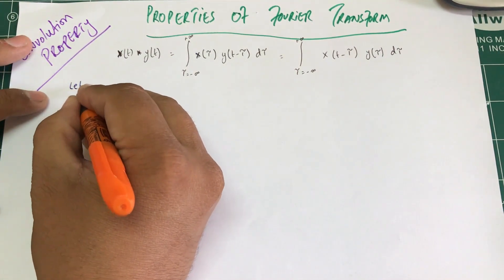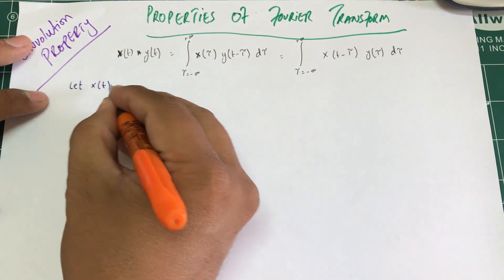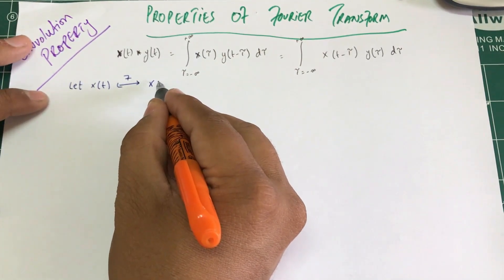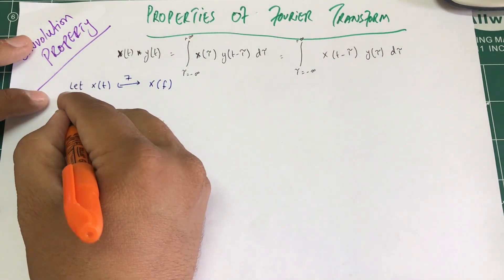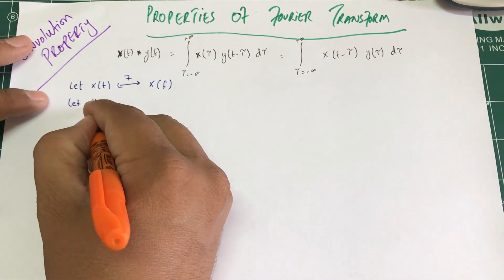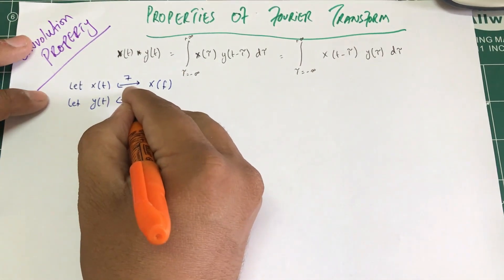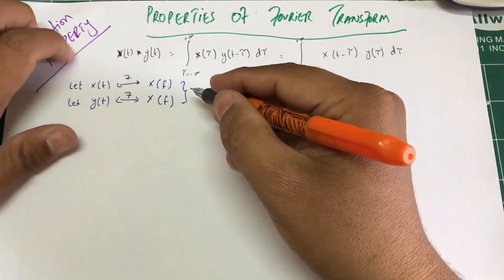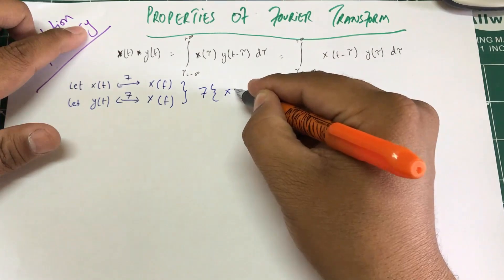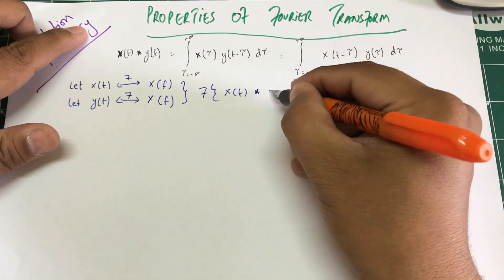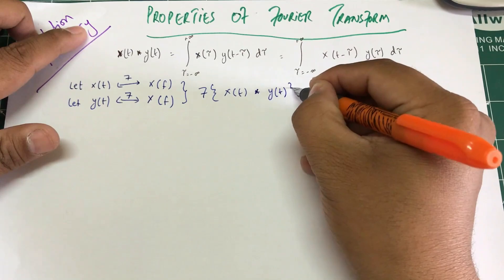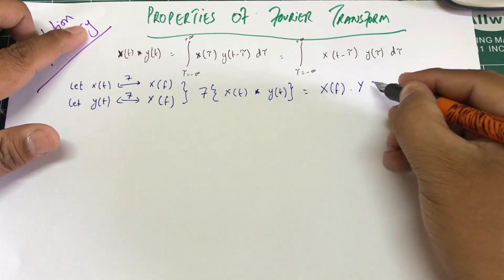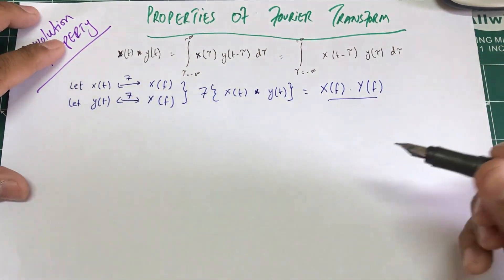Before we start, let x(t) have a Fourier transform X(f), and let y(t) have a Fourier transform Y(f). Then the Fourier transform of x(t) convolved with y(t) should be X(f) multiplied by Y(f).